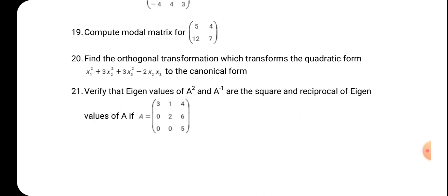Twenty-first: verify that the Eigenvalues of A squared and A inverse are the square and reciprocal of the Eigenvalues of A. A matrix is given and you are asked to verify. For the A matrix, find the Eigenvalues — A squared Eigenvalues are the squares of those, and A inverse Eigenvalues are the reciprocals. To verify, compute A squared, calculate its Eigenvalues, and confirm they match the squares of A's Eigenvalues. Similarly, find A inverse, calculate its Eigenvalues, and confirm they are exactly the reciprocals of A's Eigenvalues.